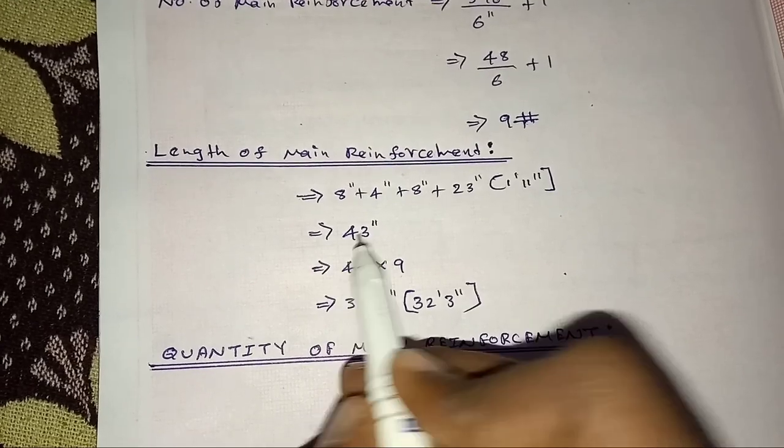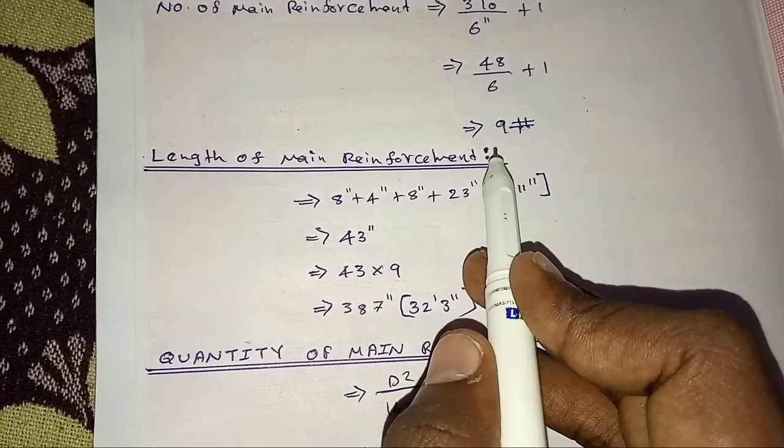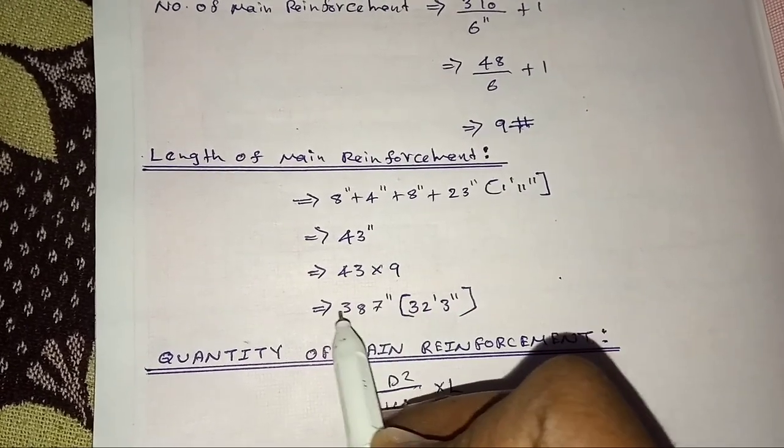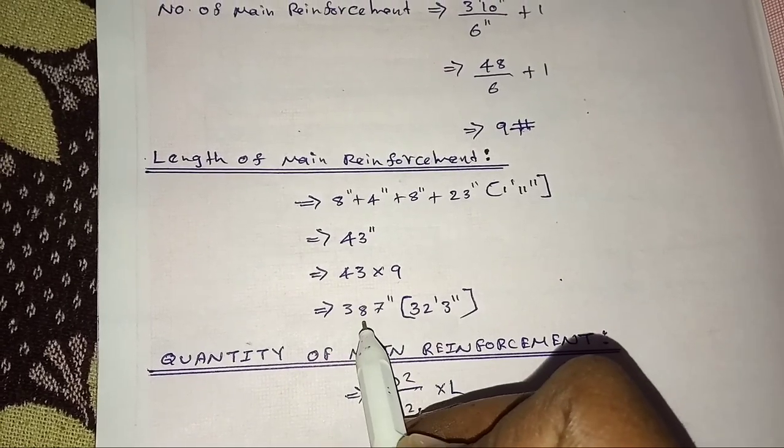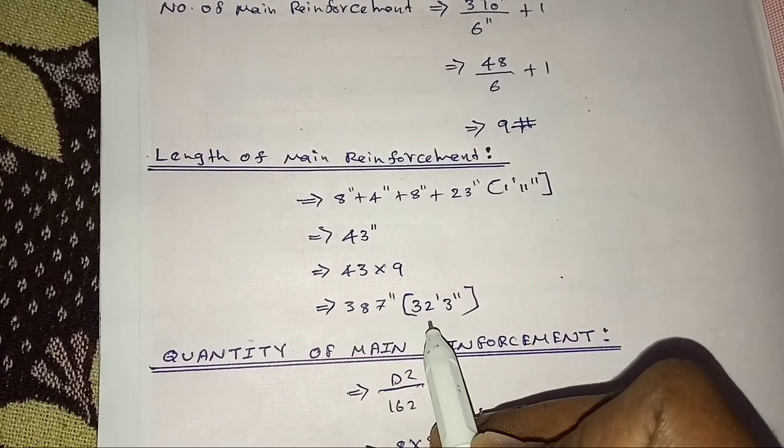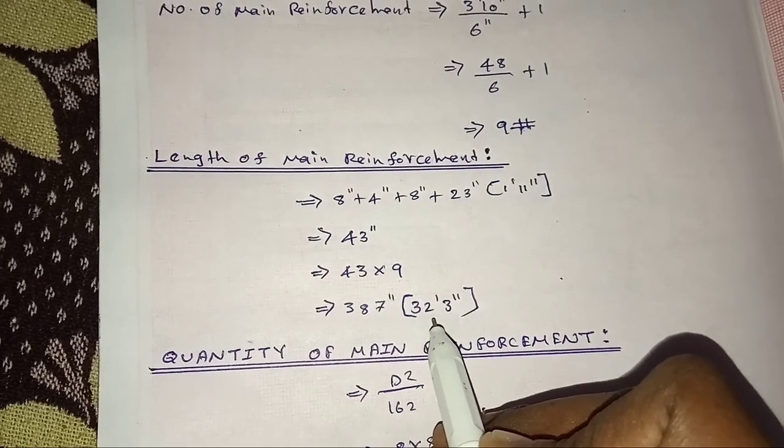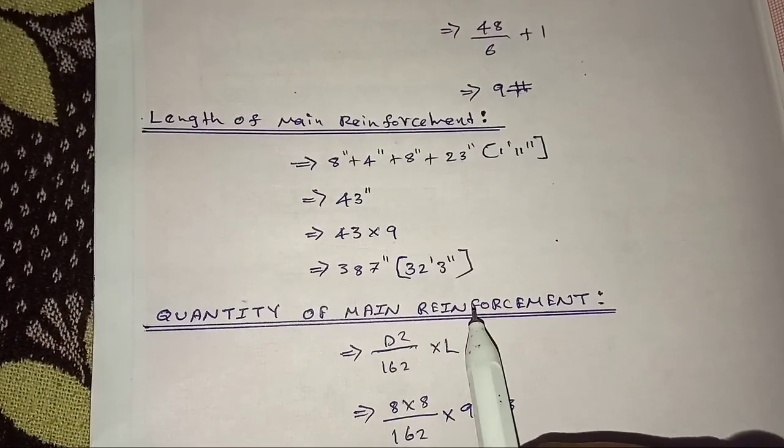That is 43 inches. When you put it in 9 numbers, then the main reinforcement total length. This is the first length of the inch. Then the feet is added, 32 feet. The quantity of main reinforcement.